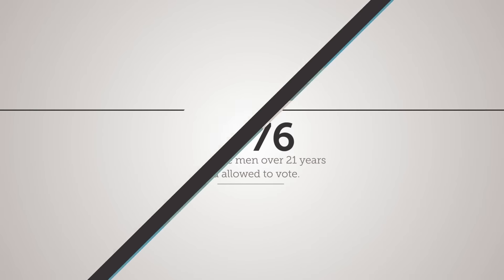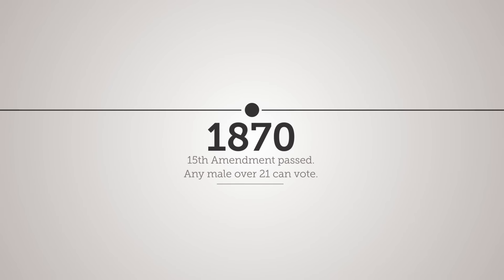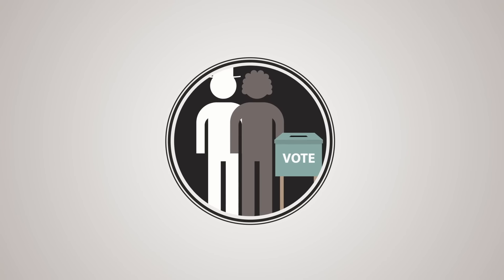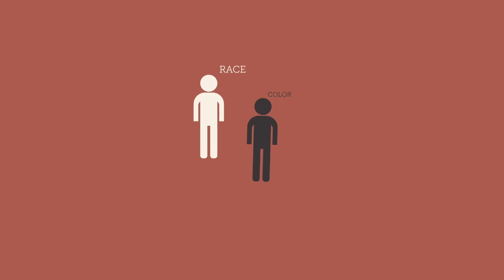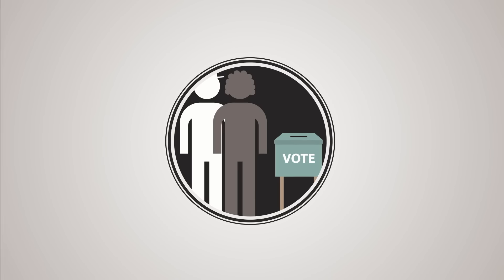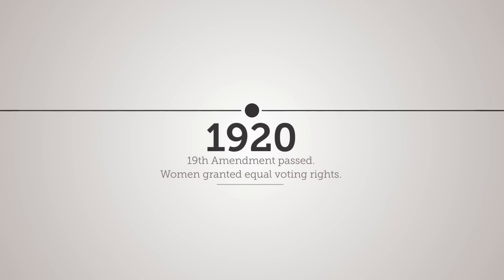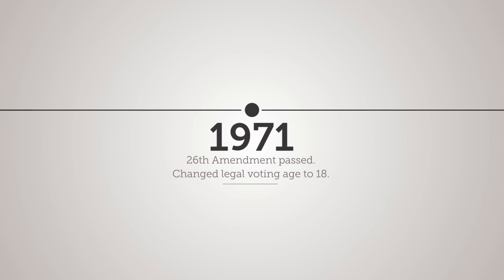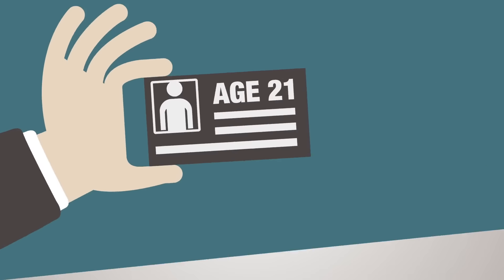Nearly 100 years passed before the 15th Amendment to the Constitution granted the right to vote to any male over the age of 21, regardless of race, color, or condition of servitude. Another 50 years passed before women were granted equal voting rights. And it was not until 1971 that the age to vote was lowered from 21 to 18.